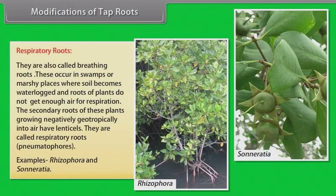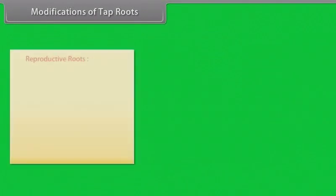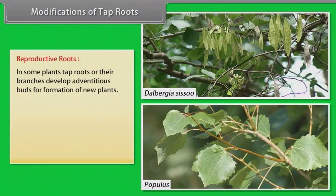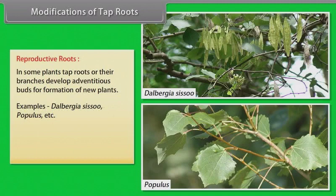Examples of pneumatophores: Rhizophora and Sonneratia. Reproductive roots: In some plants, tap roots or their branches develop adventitious buds for formation of new plants. Examples: Dalbergia sissoo, Populus, etc.